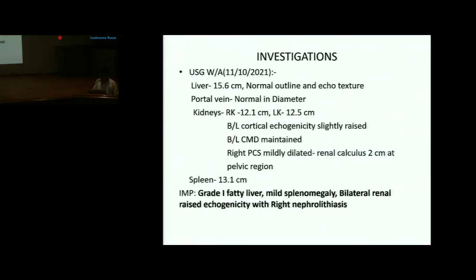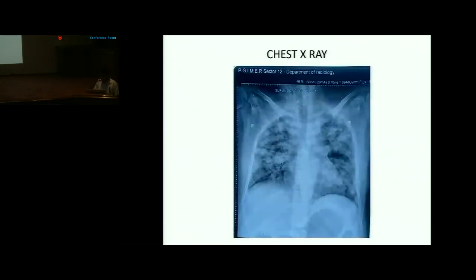Ultrasound in EMOPD showed a normal liver; portal vein was normal, but mild splenomegaly was noted. Right kidney measured 12.1 cm and left kidney 12.5 cm, both with raised cortical echogenicity, though corticomedullary differentiation was maintained. Right nephrolithiasis was also noted. Chest X-ray showed no pleural effusion, possible mild cardiomegaly, and bilateral diffuse airspace opacities in the lung parenchyma.